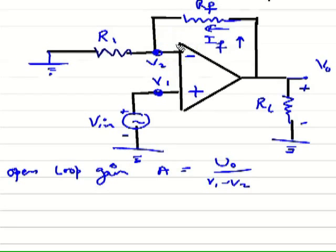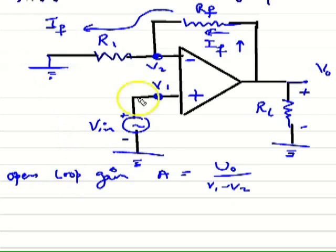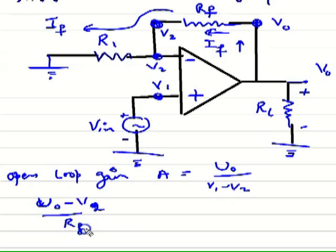Now we try to find first of all V2 — we try to find the value of V2. By using Ohm's law, because the current is flowing like this, the IF current is flowing through RF and R1 because the current taken by the op-amp is negligible. So we write first of all the IF across RF: IF equals Vout minus V2 upon RF.